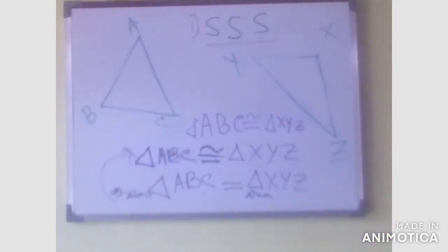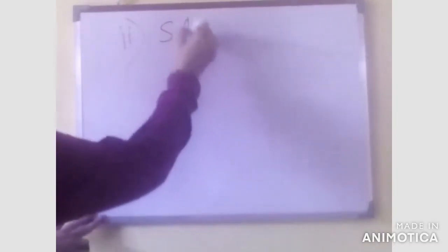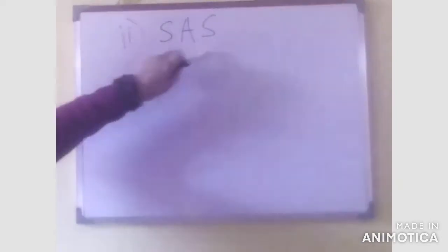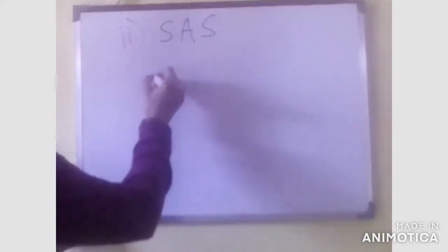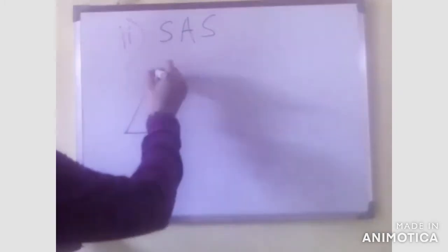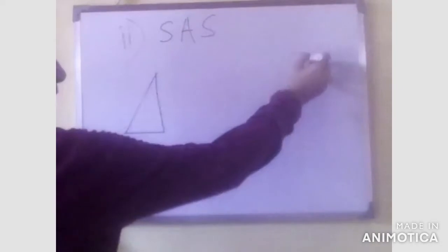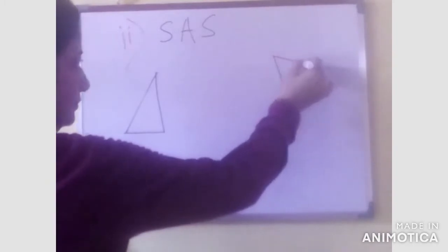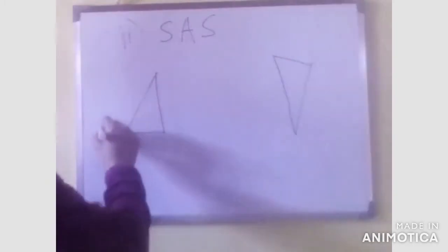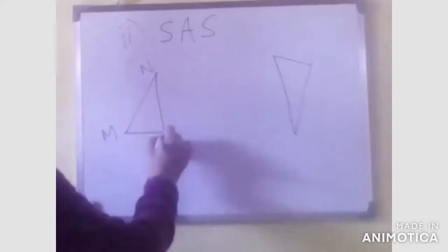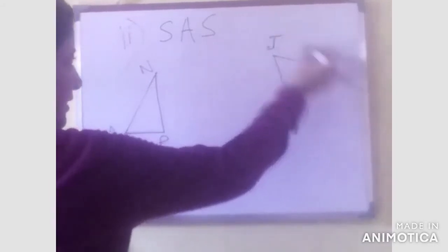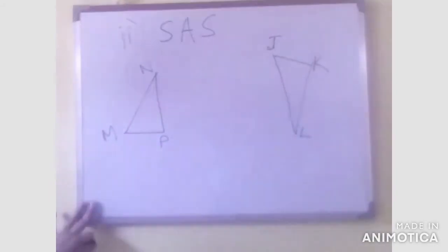Now we will go to the second condition. The second condition is SAS — side, angle, side. Suppose here is one triangle MNP and here is another triangle JKL.